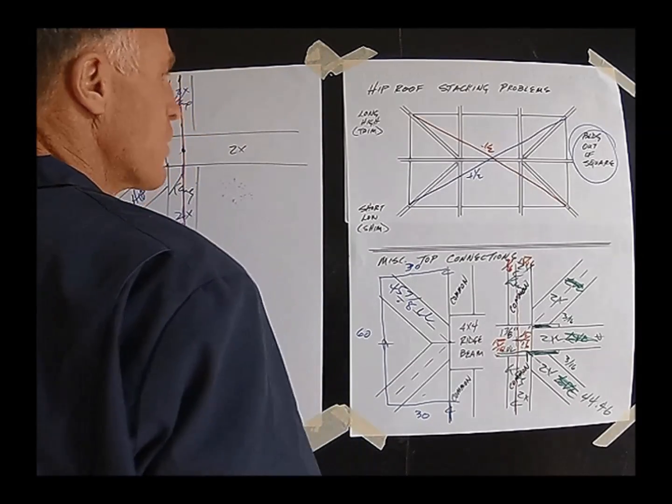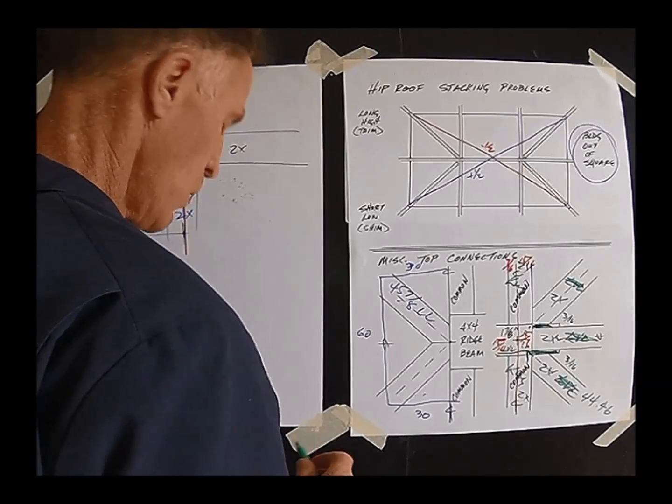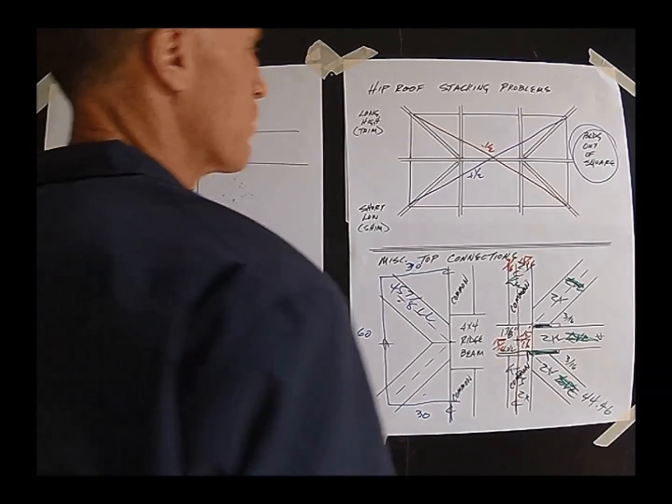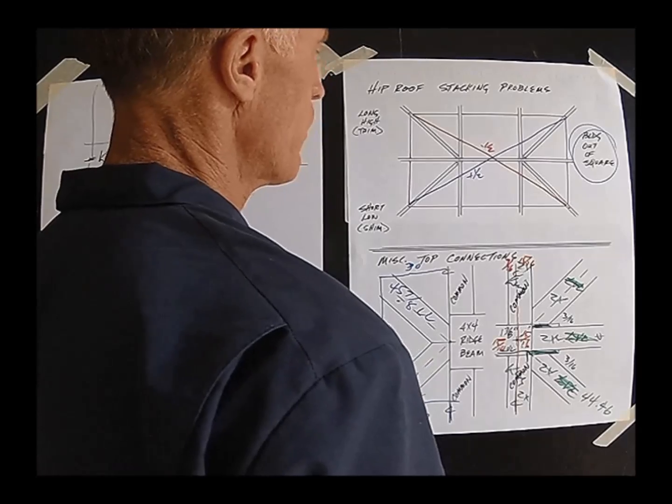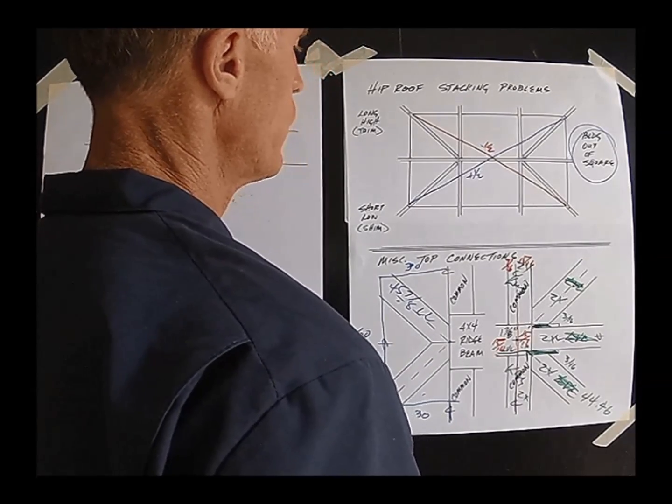So the way to overcome this is, well first of all it should have been caught when you were plumbing, lining and plating and all that stuff. But for example, it wasn't fixed and you show up to build this roof.